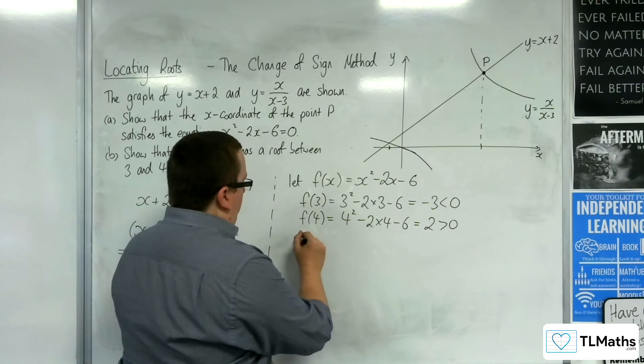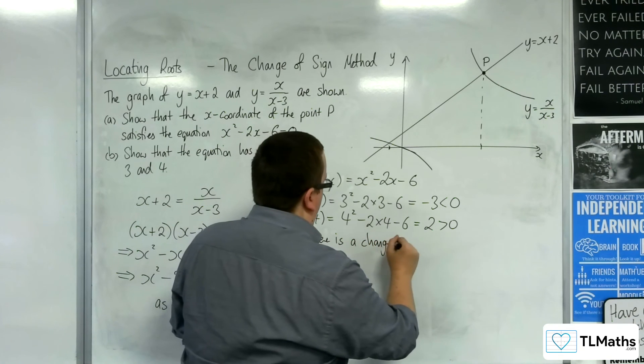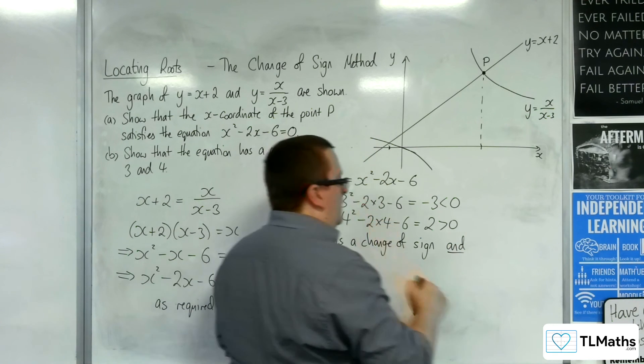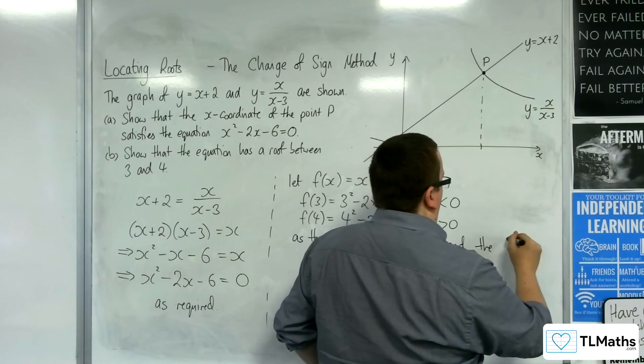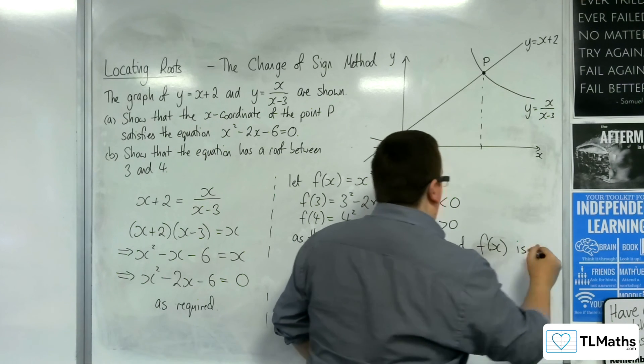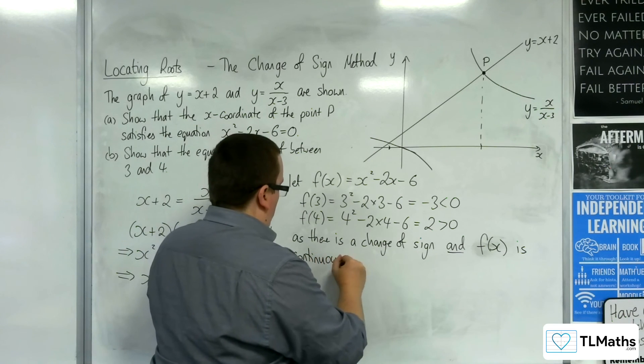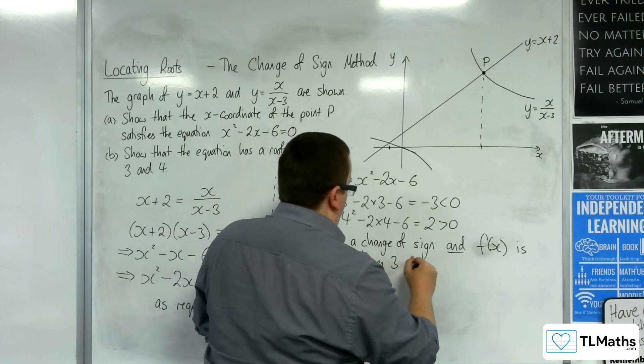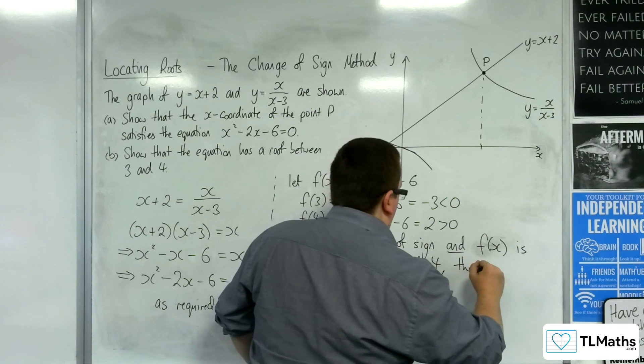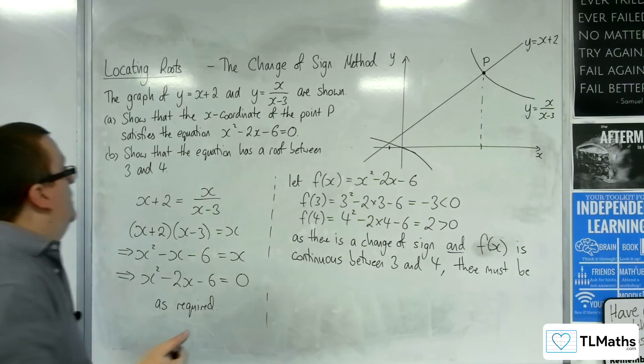So as there is a change of sign, and don't forget, the curve, or f(x), is continuous between 3 and 4, there must be a root between 3 and 4.